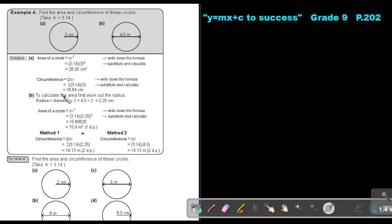In this one, to calculate the area, first work out the radius. So how do I get the radius? I take this and I divide it by 2 and I get 2.25. So what is the area of a circle? It is πr².